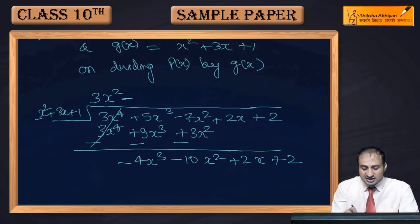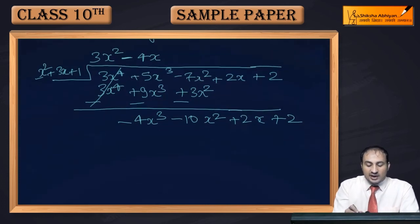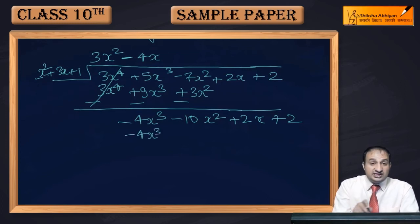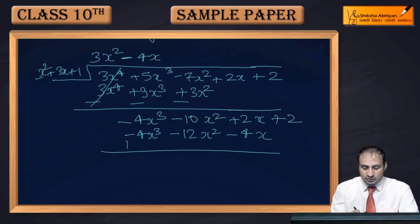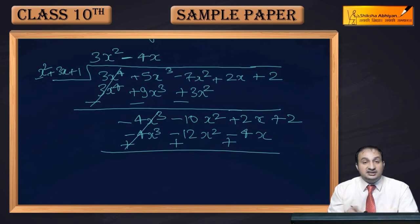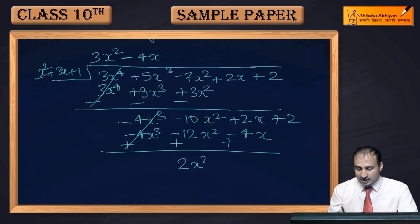Now, to get -4x³ from x², we multiply by -4x. So the next quotient term is -4x. Multiplying -4x by x² gives -4x³, by 3x gives -12x², and by 1 gives -4x. Performing subtraction — changing signs to opposite — -10x² + 12x² gives +2x², and 2x + 4x gives 6x.